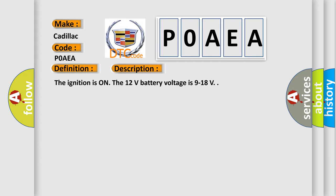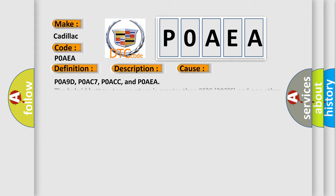This diagnostic error occurs most often in these cases: P0A9D, P0AC7, P0ACC, and P0AEA. The hybrid battery temperature is greater than 95°C (203°F) and one other temperature sensor is less than 70°C (158°F).